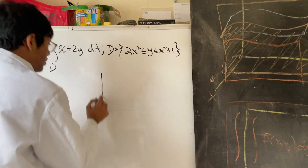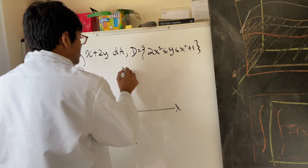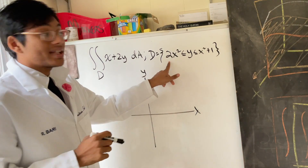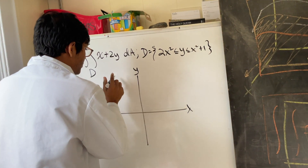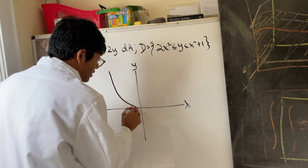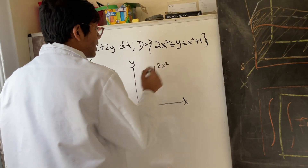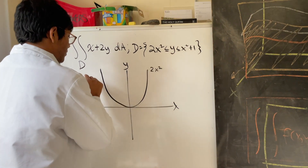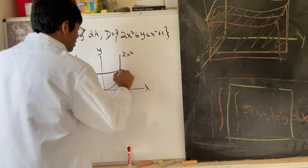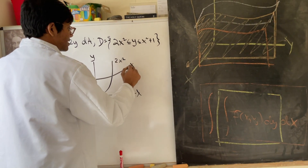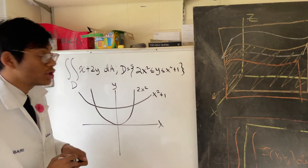So what does our region look like? First, plot out the xy-plane. What does 2x squared look like? That's just gonna be a slightly compressed version of x squared — here's 2x squared. And what does x squared plus 1 look like? Well, it looks like x squared but shifted up by 1 unit — so this is x squared plus 1, slightly exaggerated just to show the area in between.